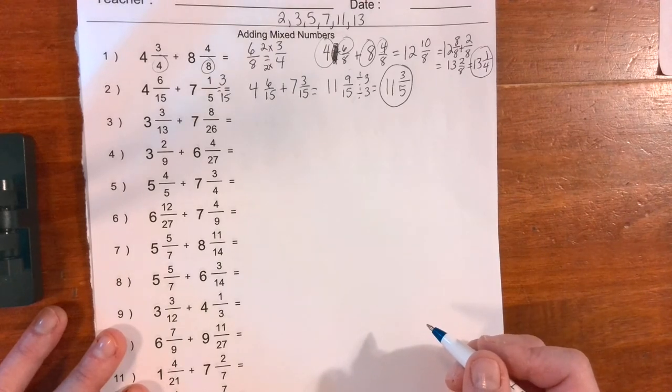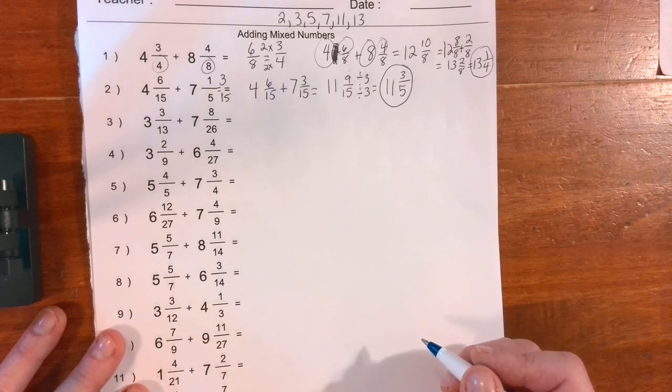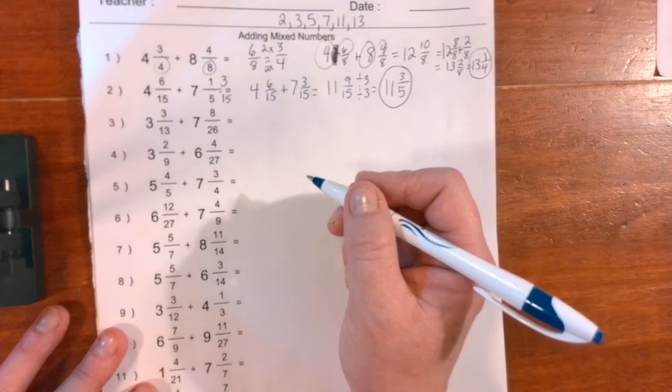Alright, at this point, if you haven't completed numbers three and four, you're going to stop the video and pause it and complete those two. And then you're going to check them as we go over it together. If you have already completed, you can just keep going. Alright, so here we go for number three and four.